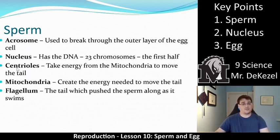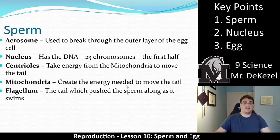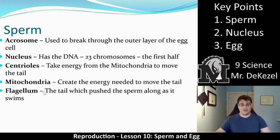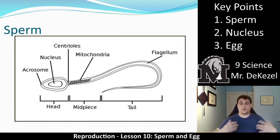We also have centrioles, which take energy from the mitochondria and move it towards the tail. The mitochondria create the energy needed to move the tail, the centrioles use that energy to move the flagellum, and the flagellum — the tail — is the thing that moves and pushes the sperm along as it swims. The whole purpose of the mitochondria, centrioles, and flagellum is to propel the nucleus and the acrosome forward towards the egg.